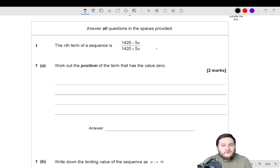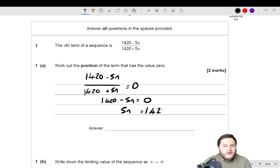Well, if it has a value of 0, this is equal to the value of 0, then (1420 - 5n) / (1420 + 5n) is equal to 0. Now, if a fraction is equal to 0, that implies that the numerator must equal 0, because that is the only way you can get 0 in a fraction. So that must mean that 5n is equal to 1420, so then n must equal 804, no, 284, that's what I was meant to put, 284. There we go.